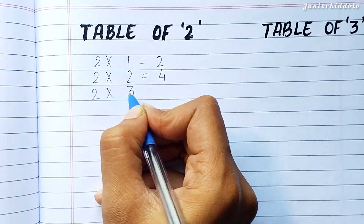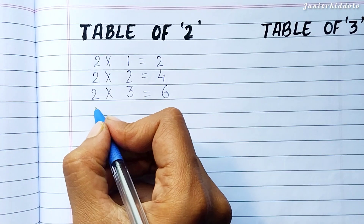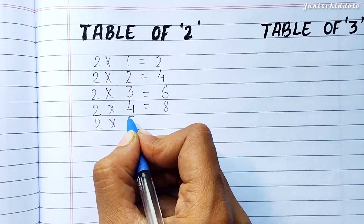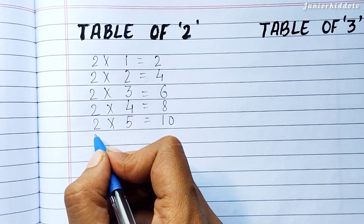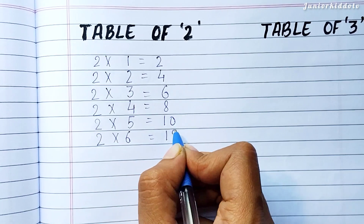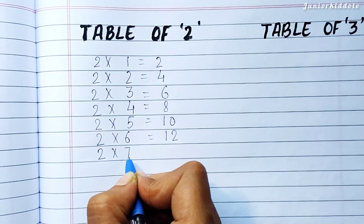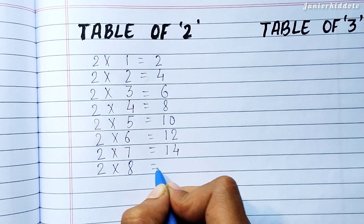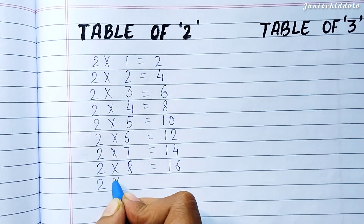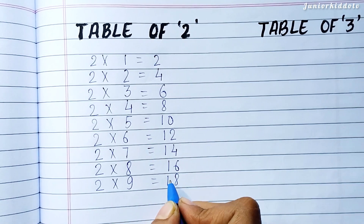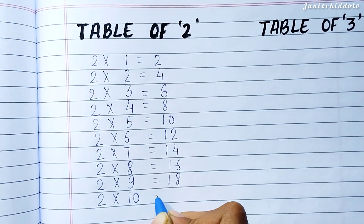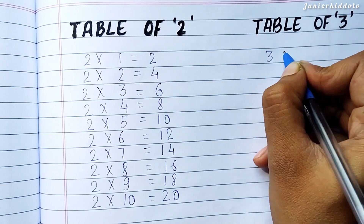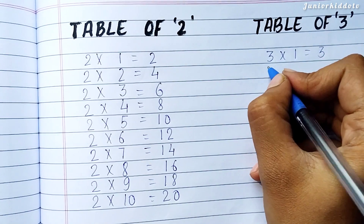Two Threes are Six. Two Fours are Eight. Two Fives are Ten. Two Sixes are Twelve. Two Sevens are Fourteen. Two Eights are Sixteen. Two Nines are Eighteen. Two Tens are Twenty. Table of Three. Three Ones are Three.